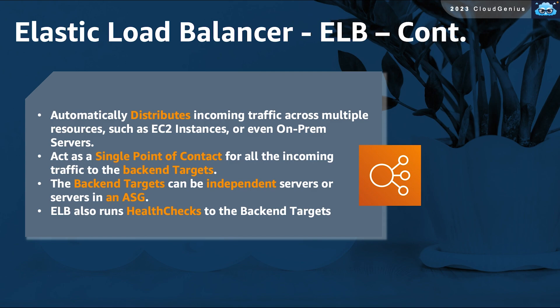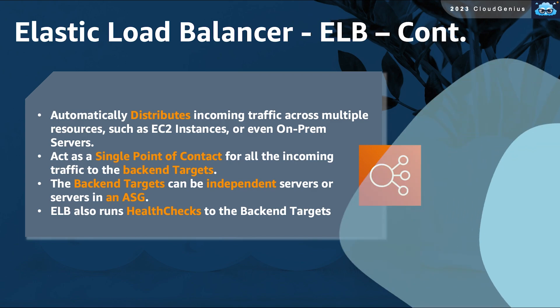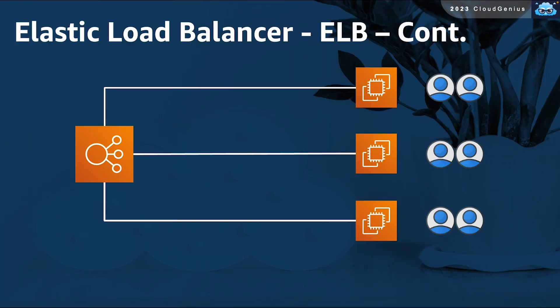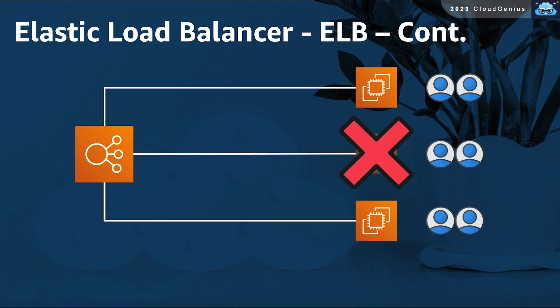The ELB serves as a single point of contact for all of the back-end servers. Similarly to ASG, ELB will also periodically run health checks on the back-end targets in order to identify healthy and unhealthy nodes, and properly redirect clients to the healthy nodes only. If, through health checks, the ELB discovers that an EC2 instance became unhealthy, it will start redirecting the clients connected to that node to the remaining healthy targets and redistributing the load.